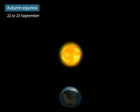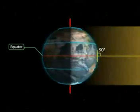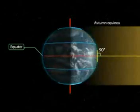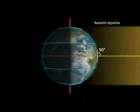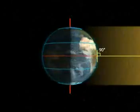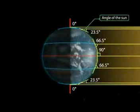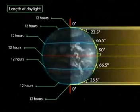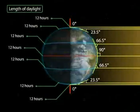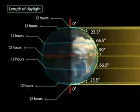Autumn Equinox: On the 22nd or 23rd of September, the overhead sun is over the equator again. The equator receives the largest amount of solar radiation. On this day, the northern hemisphere is in the autumn equinox, while the southern hemisphere is in the spring equinox. The angle of the sun decreases towards the poles. The two hemispheres receive a similar amount of solar radiation, and the length of day and night is the same at all places on the Earth.